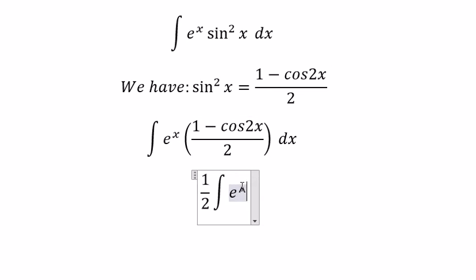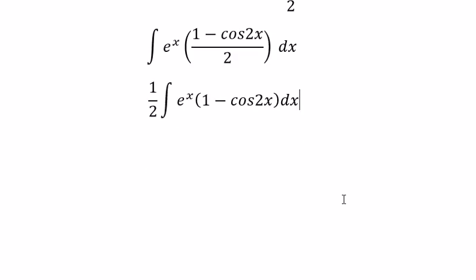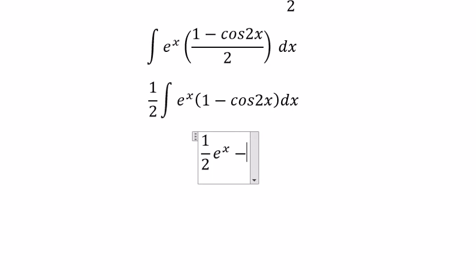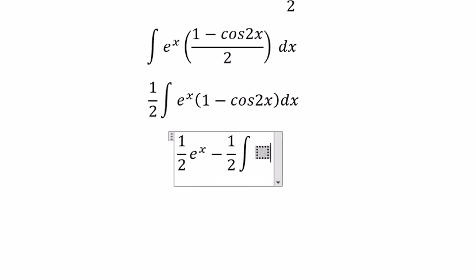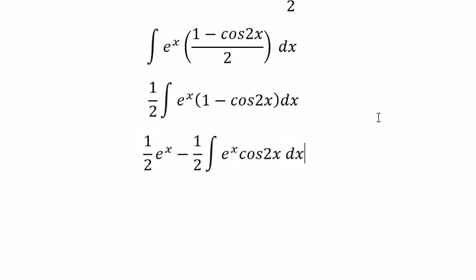We get the integral of e^x(1 - cos2x)dx. This simplifies to 1/2 e^x minus 1/2 times the integral of e^x cos2x dx. I will concentrate on this integral of e^x cos2x dx.